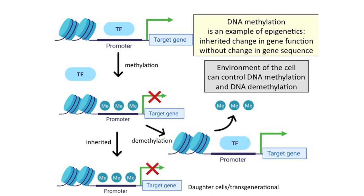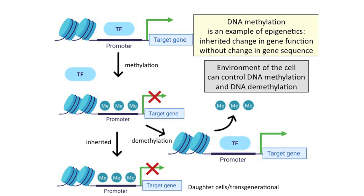There's some evidence for transgenerational inheritance of DNA methylation — some DNA methylation marks in a female can get passed on to offspring. This is an example of epigenetics: an inherited change in gene function, a gene permanently silenced without any change in gene sequence. It's a way to have inheritance without actually changing the structure of the DNA.